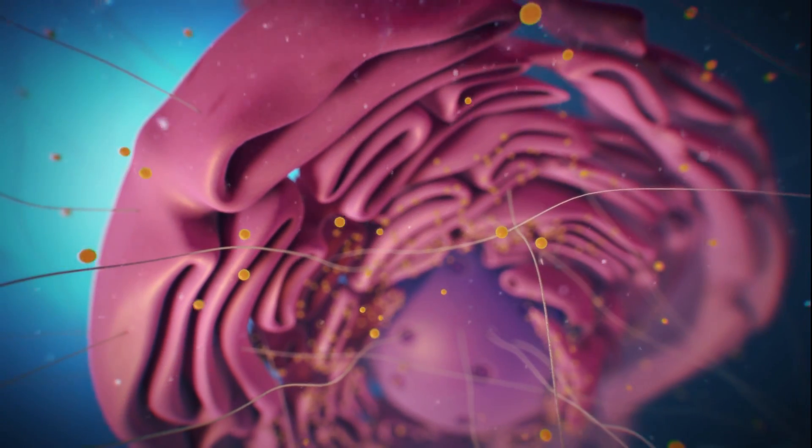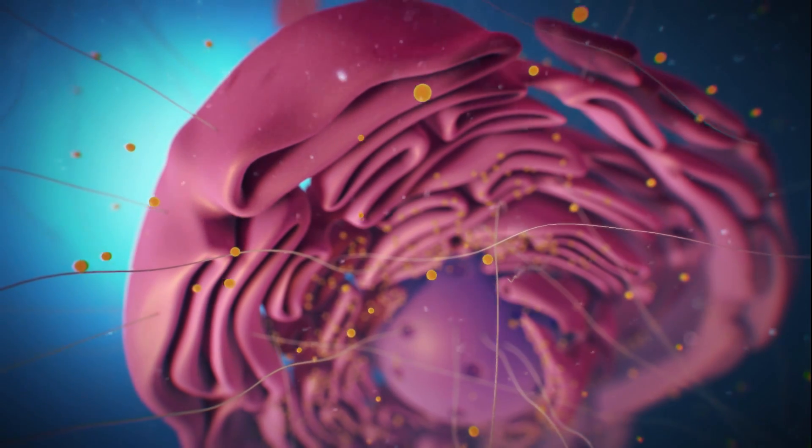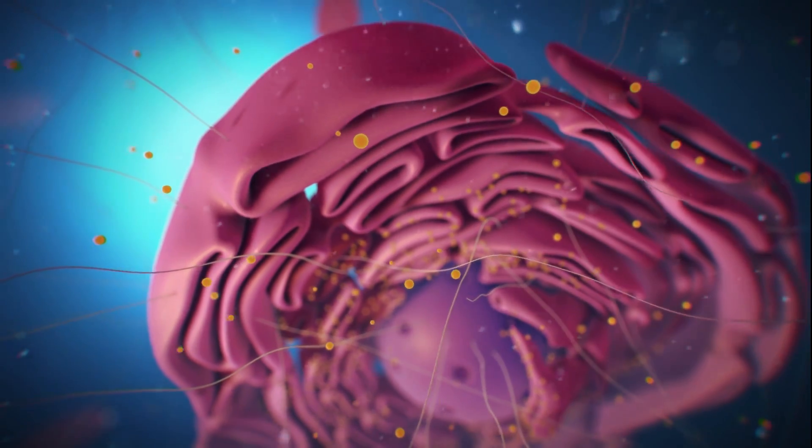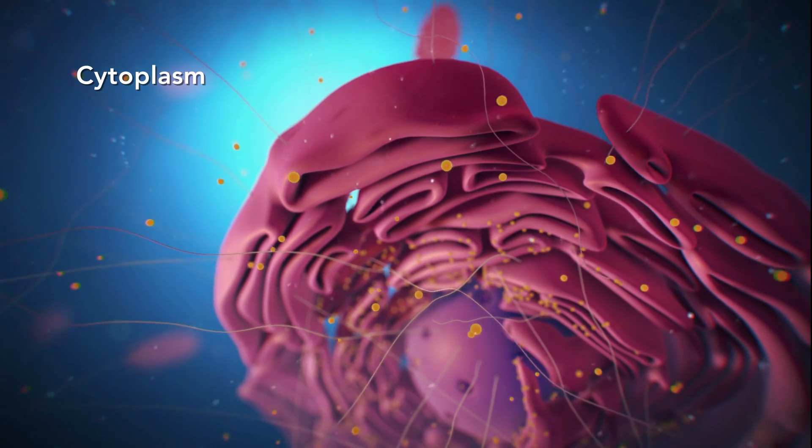Outside the nucleus, the ribosomes and the rest of the organelles float around in cytoplasm, which is the jelly-like substance.